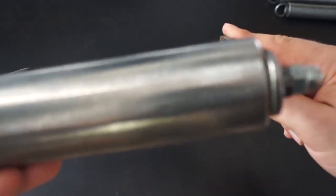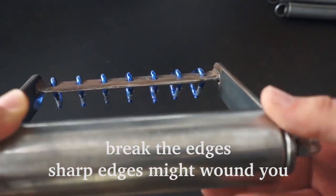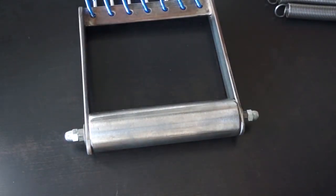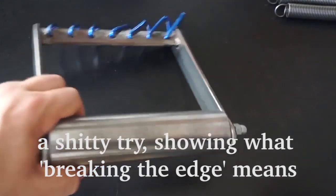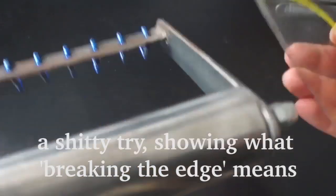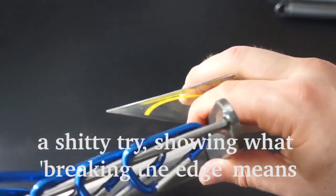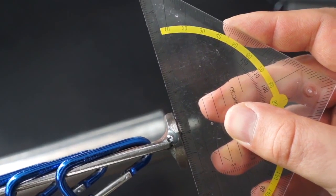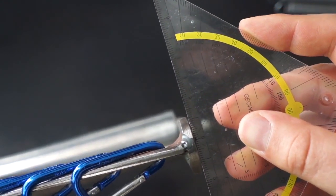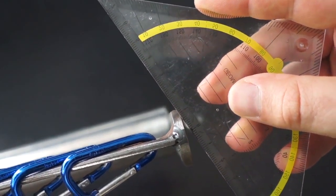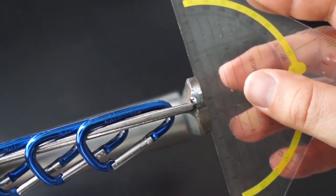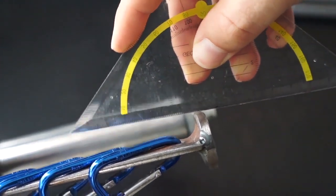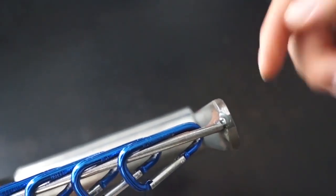Wenn ich jetzt hier das Geodreieck nehme und dran halte, ihr seht, dass die Oberkante noch weiter geht, dass sie hier rund ist. Also ich kann wirklich mit dem Geodreieck an der Kante einmal rund laufen, ohne dass es hakt wie wenn es ein rechter Winkel wäre.